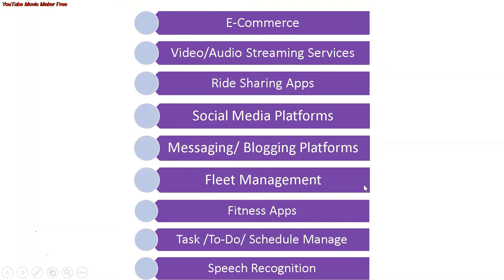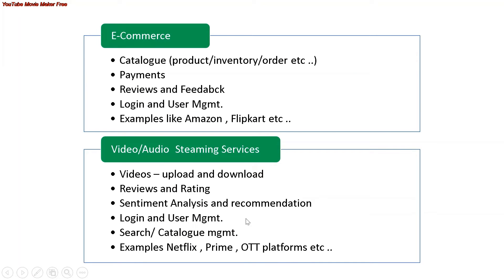When you take an e-commerce example, you can have different services for catalog, payments, reviews and feedback, and login or user management — similar to Amazon or Flipkart. The same applies to video and audio streaming services like OTT platforms, where all videos can be a service, and reviews, ratings, sentiment analysis, and recommendations can be other microservices.